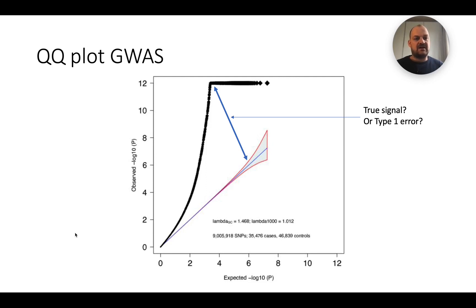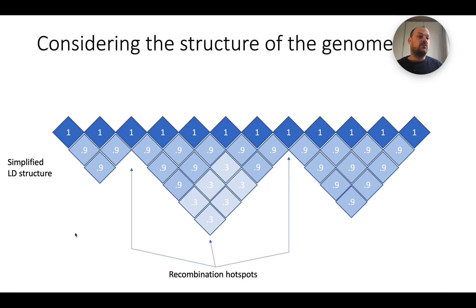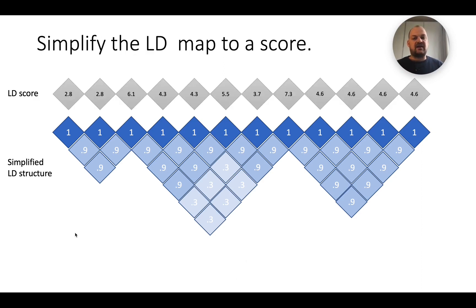That's the question we're asking when using LD score regression. A really important ingredient is the LD structure of the genome. What I've depicted here is a part of the genome where each dark blue square is a SNP and the lighter blue squares depict correlations between adjacent SNPs. LD introduces correlations between adjacent SNPs — this also creates the towers in the Manhattan plot, because if one SNP is truly associated with a trait, due to LD the other correlated ones become associated too. You can summarize these LD patterns into a score: for every SNP, just the sum of its LD with all its neighbors.